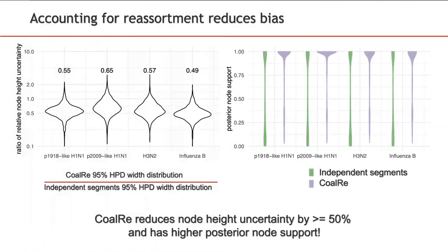Next, we compare the uncertainty in node height estimates obtained by CoalRe versus the model which assumes that each segment is an independent realization of the same coalescent process and thus does not account for reassortment. We have quantified the uncertainty as the relative width of 95% highest posterior density intervals and found that CoalRe reduces this uncertainty by at least half. Posterior clade credibility support was also higher for CoalRe. Therefore, accounting for reassortment events reduces bias in influenza inference.